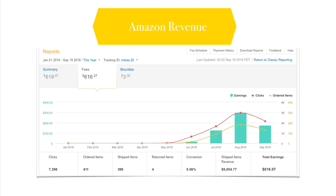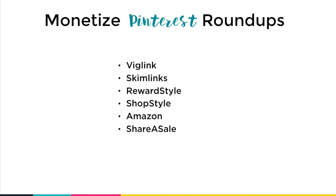Think about it — what if you have 10, 15, or 20 different roundups all doing the same thing? You can see how these can be absolute money makers for your blog, even if it's brand new. For monetizing your roundups, there are several affiliate companies I'd recommend. If you're brand new, start with VigLink, which turns all the links on your blog into monetizing opportunities. SkimLinks does the same thing. There's also RewardStyle and ShopStyle, great for home decor, fashion, and beauty. For individual products, try Amazon and ShareASale — these are some of my favorites to get started.